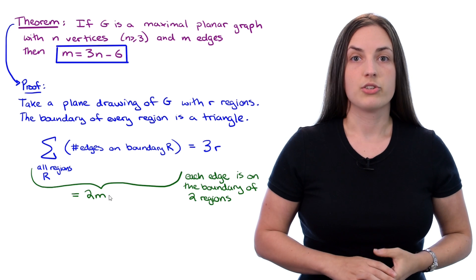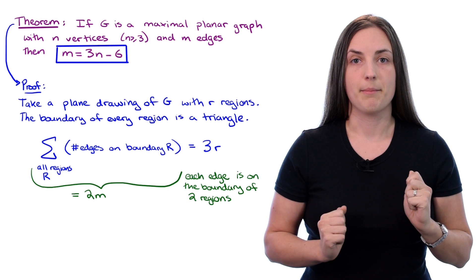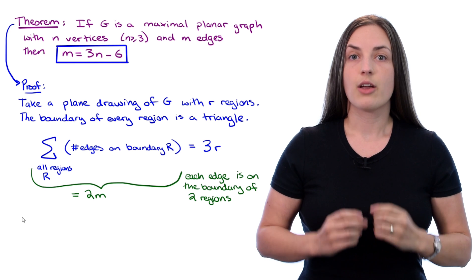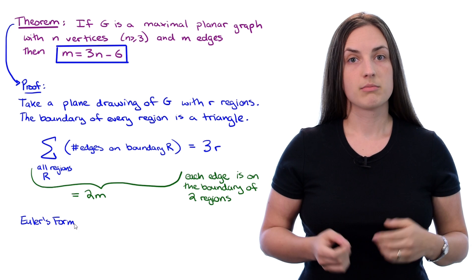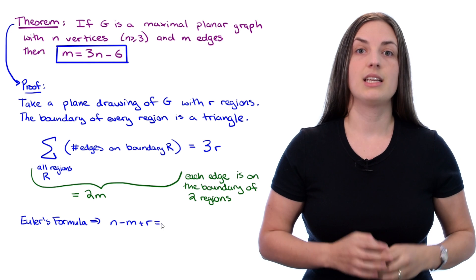In other words, it's equal to 2M. Now we have a relationship between R and M. We also know that the graph is a plane graph, so it must satisfy Euler's formula for plane graphs. In other words, N minus M plus R has to equal 2.